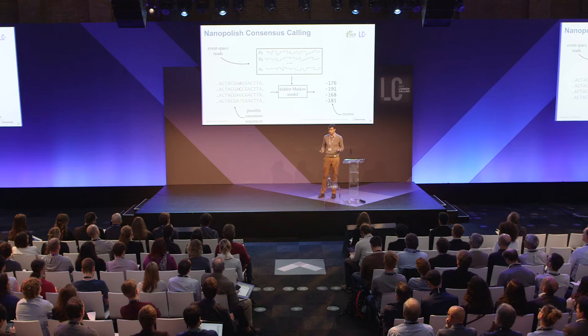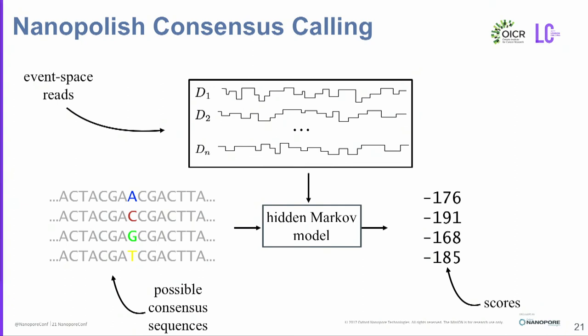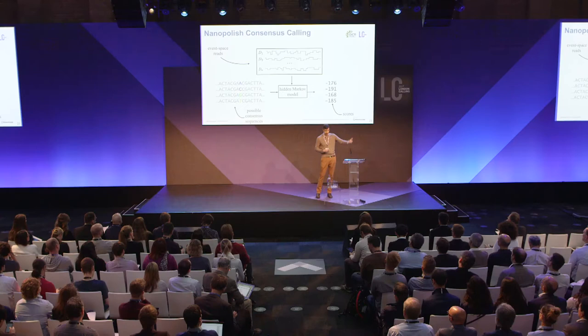The input into the model is a set of event-space reads encoded in FAST-5 files, and also a set of possible consensus sequences. This is essentially an optimization problem: we start with an initial draft genome assembly, apply mutations — random substitutions, insertions, and deletions — score them with the hidden Markov model, and if a mutation increases the probability of observing the input reads, we apply it to the genome. We iterate this process, making another round of mutations until it converges on a sequence we can no longer improve.